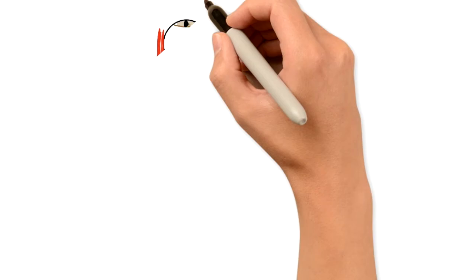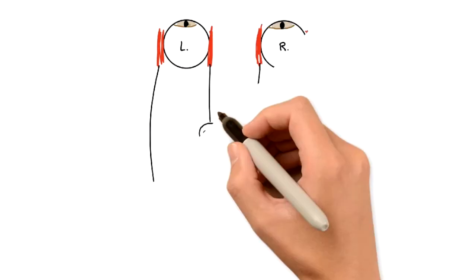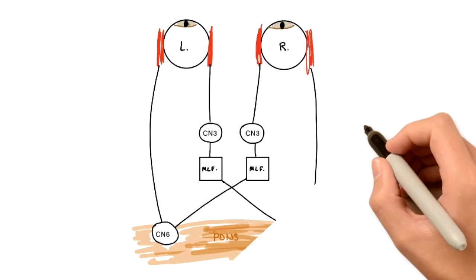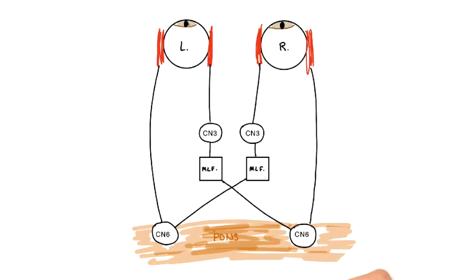Now to explain the pathology of INO we have to first understand the normal signaling pathway of eyes during lateral gaze. Lateral gaze can obviously be to the right or left side, but for today's video let's just take lateral gaze looking to the left side to simplify what actually happens with the eyes and then to explain INO.